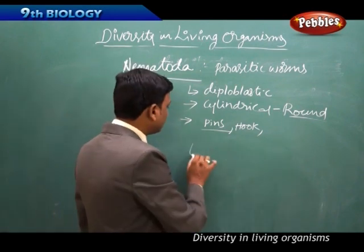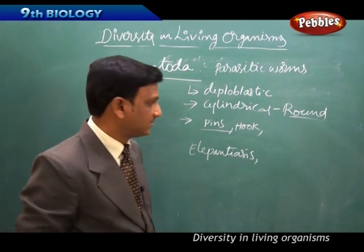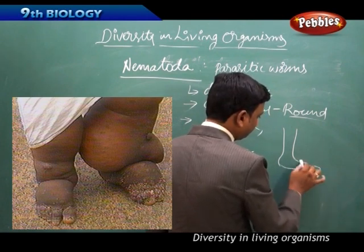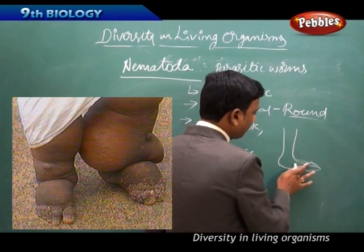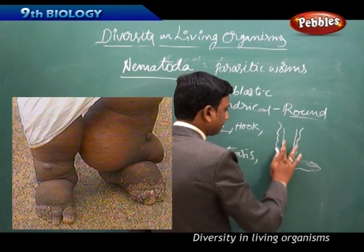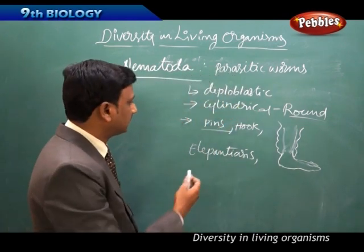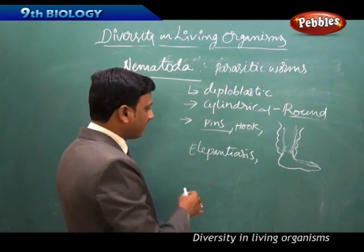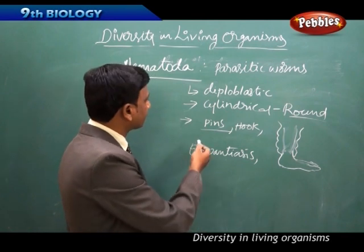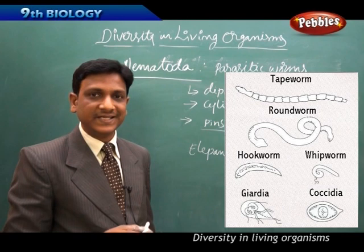Nematoda worms are mostly parasitic and cause many diseases in humans. One such disease is elephantiasis, where the infected leg swells dramatically. Elephantiasis is caused by a nematode parasite. Similarly, roundworm infections in the stomach and hookworm or pinworm infections causing itching near the anus are also caused by nematode worms.